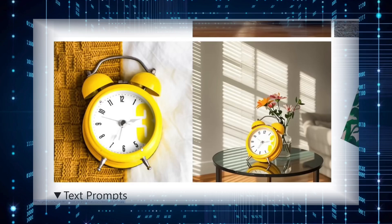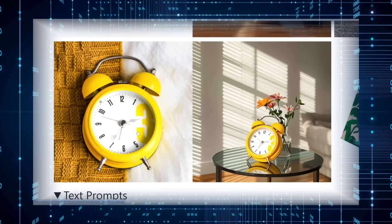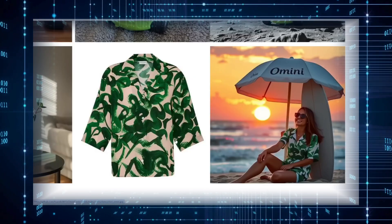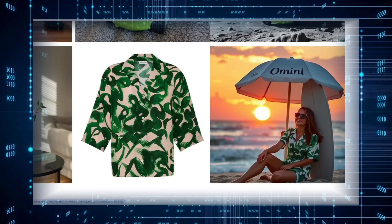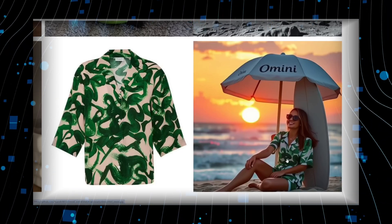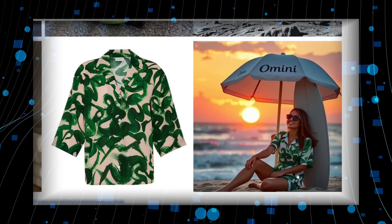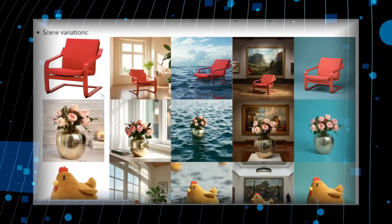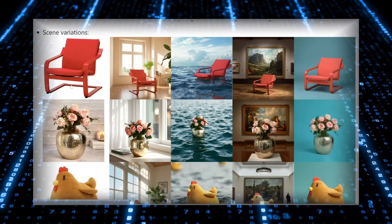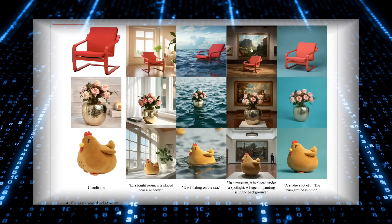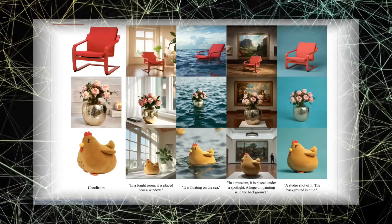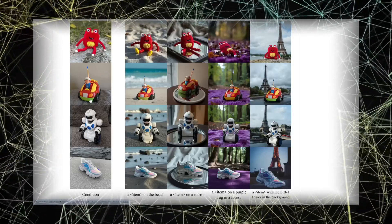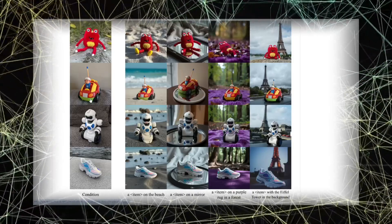Take a yellow clock image and prompt 'this item is placed on a shiny glass table with a vase of flowers' — the clock appears on the table with its shape and features maintained. Omni Control is also great for adding clothes to models or creating product photos. Give it an image of a shirt and prompt a beach scene of a lady sitting under a beach umbrella wearing this shirt at sunset — the shirt is seamlessly added with the pattern accurately rendered. This works for various clothing items, even those with complex patterns, though it's not always flawless with intricate designs. This AI has huge potential for product photography, placing a red chair, a vase of roses, or even a stuffed chicken in various environments. It even handles challenging objects like a patterned stuffed animal, a uniquely colored toy car, a complex robot toy, and an iridescent shoe with reflections when placed on a mirror.